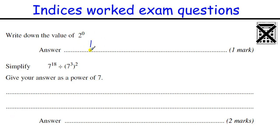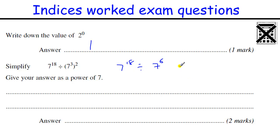Anything to the power of 0 is 1 — a nice easy mark. For the second part: 7 to the 18 divided by 7 cubed squared. That's a power of a power, so 3 times 2 equals 6. When dividing powers we subtract indices: 7 to the 18 minus 6, which is 7 to the power of 12.